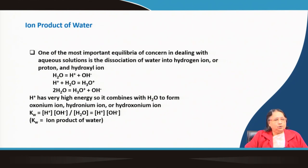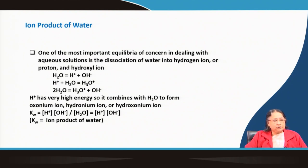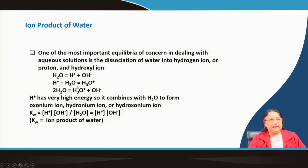It is very important to know the ion product of water. We know that water dissociates into H⁺ and OH⁻. Of course, H⁺ cannot stay as such — it immediately combines with water to form hydronium ions. So in terms of the formation of hydronium ions, this is the actual equation for water dissociation. Water dissociates very slightly, and the ion product of water, called Kw, is nothing but the equilibrium constant of this equation.